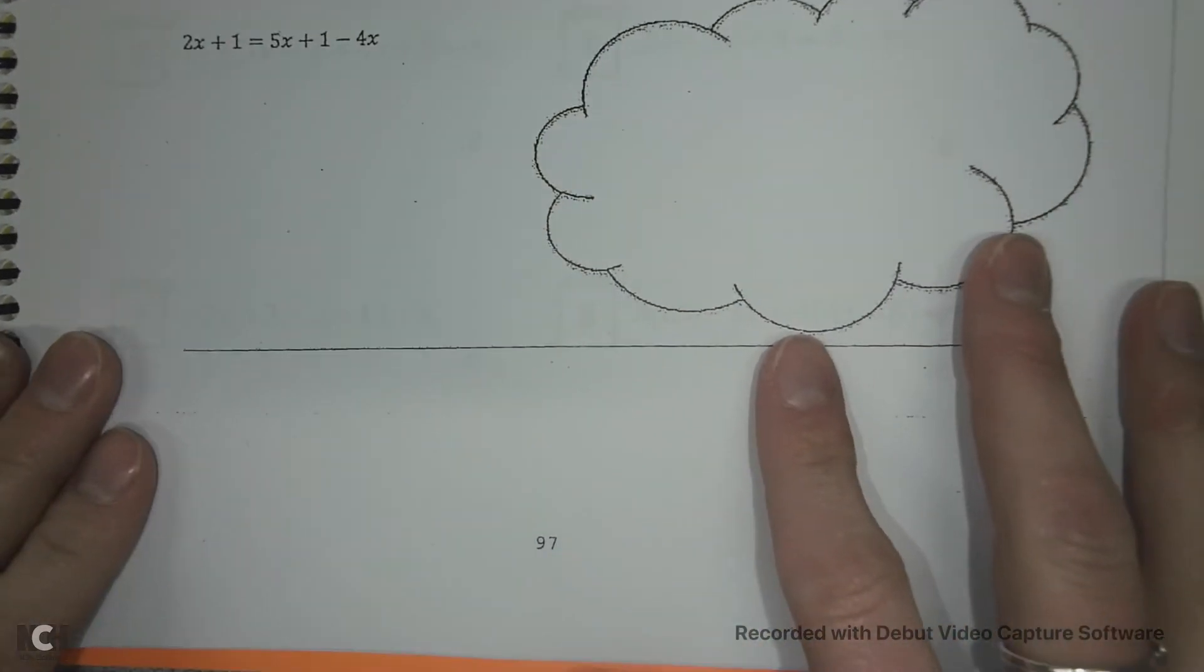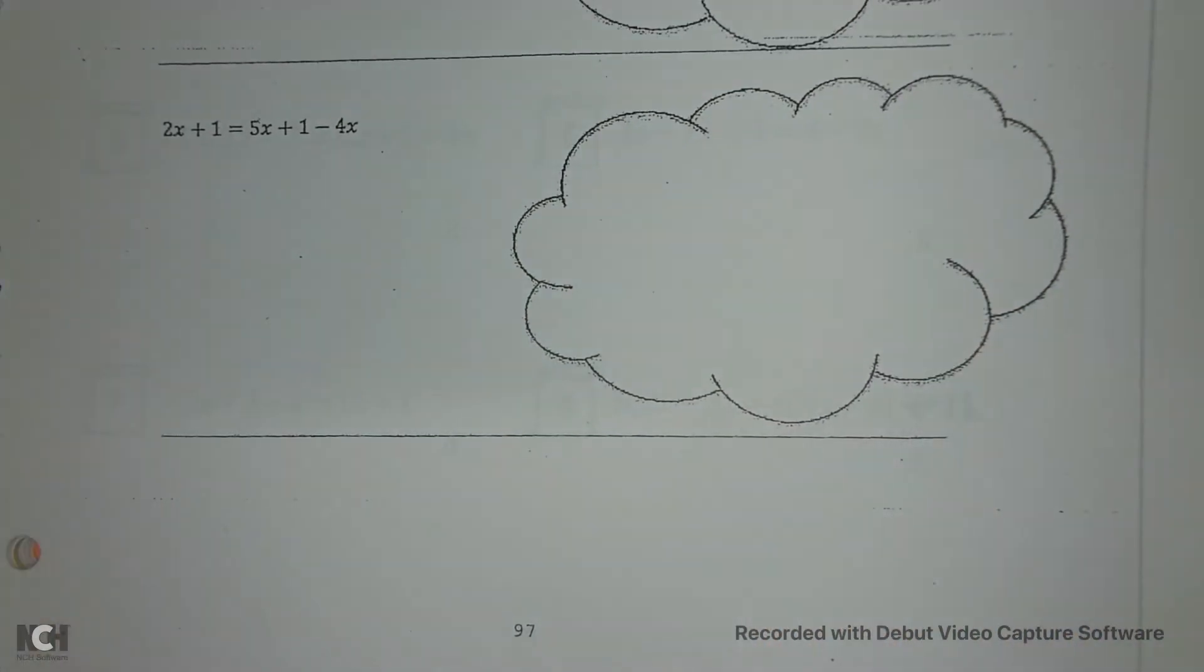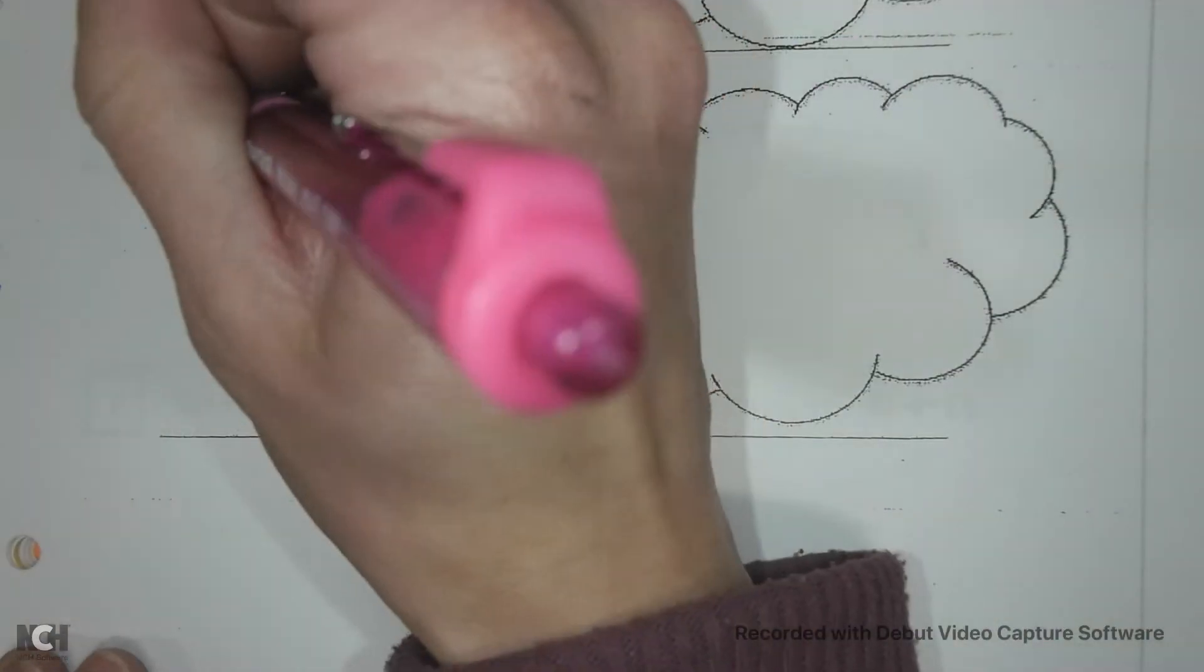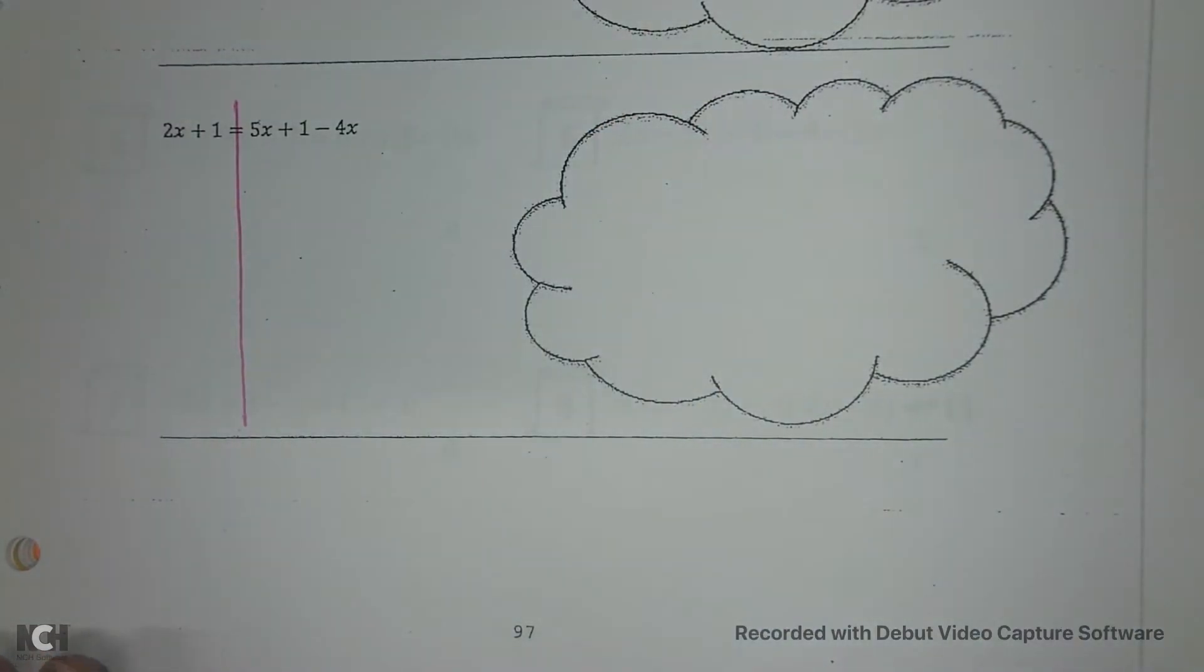And we're going to talk about each of the three different types. First, we're going to start with this guy, the bottom. Okay, so we are going to get the x by itself, just like we've done before. On the left hand side, I cannot distribute and I don't have any like terms.